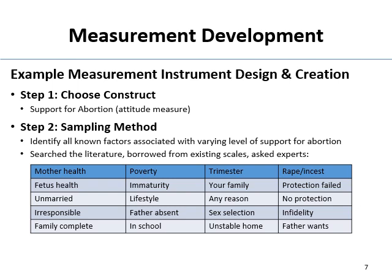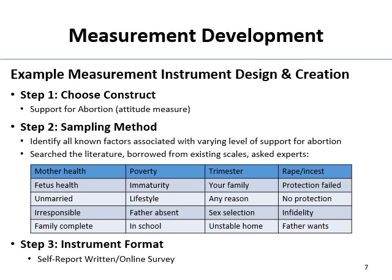The facets or factors I identified that I needed to write items for included: the mother's health being at risk, serious fetal health problems, the mother being unmarried and single, the mother still being in school, the couple not wanting that sex of child, and various other circumstances. The format was already selected — self-report in class — though for your dissertation it might be an online survey. The university has an online survey program that dumps data directly into an SPSS-readable format, and it's free to use.